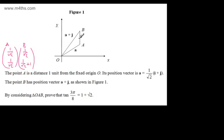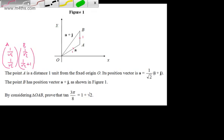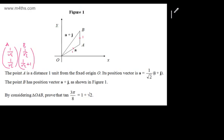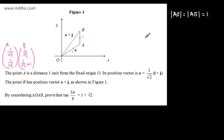We can say that this length is going to be 1, and we know this length is going to be 1. So the modulus of AO will be equal to the modulus of AB, which will be equal to 1 unit. We're told that A is a distance of 1, and we can see that AB is also a distance of 1.